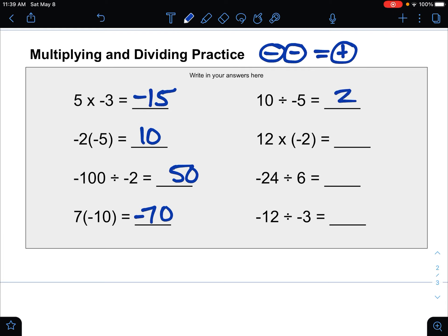10 divided by 5 would be 2, and then only one negative on the 5, so a negative 2. 12 times negative 2 would be negative 24, because it's 12 times 2 is 24, but the one negative there makes it negative.